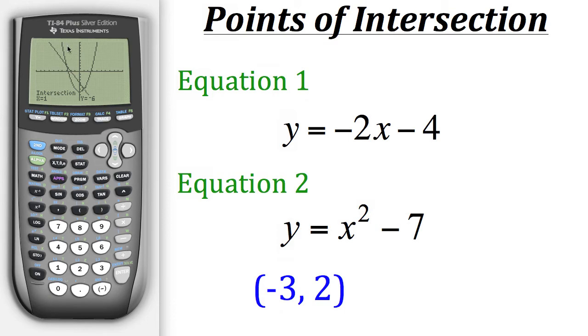And then the calculator gives us that intersection point. So here we could see that it occurs when x is 1 and y is negative 6. So the second point of intersection is at x equals 1 and y equals negative 6. And that's how you find points of intersection using a calculator.